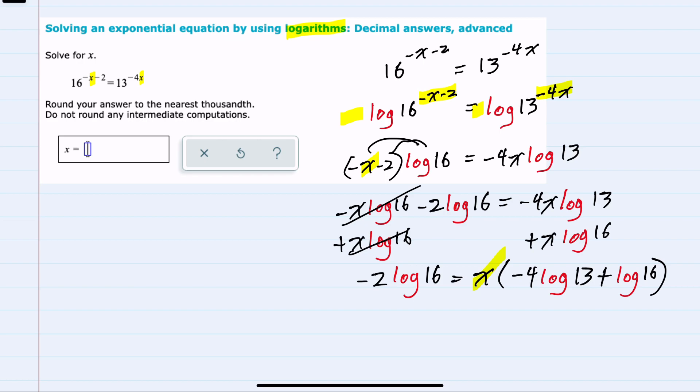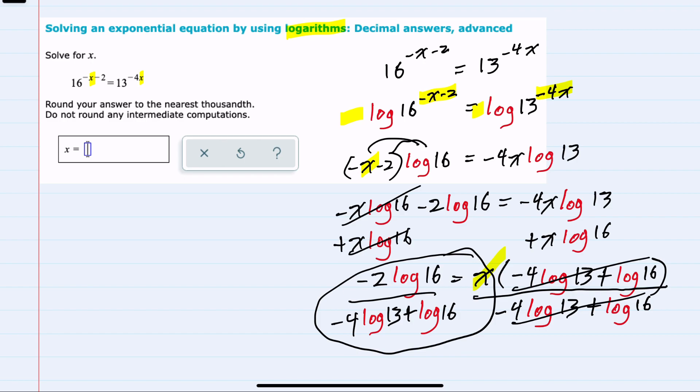And with only one x, we can now solve for x by dividing everything that's being multiplied by x on both sides, leaving us with just the x on the right-hand side, and this expression on the left-hand side.